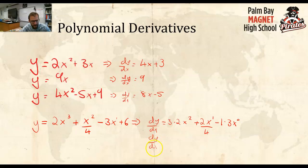dy dx is equal to 3 times 2 is 6x squared plus 2 over 4 is just 1 half. Or, you know what? I'm just going to say x over 2 to the power of 1.